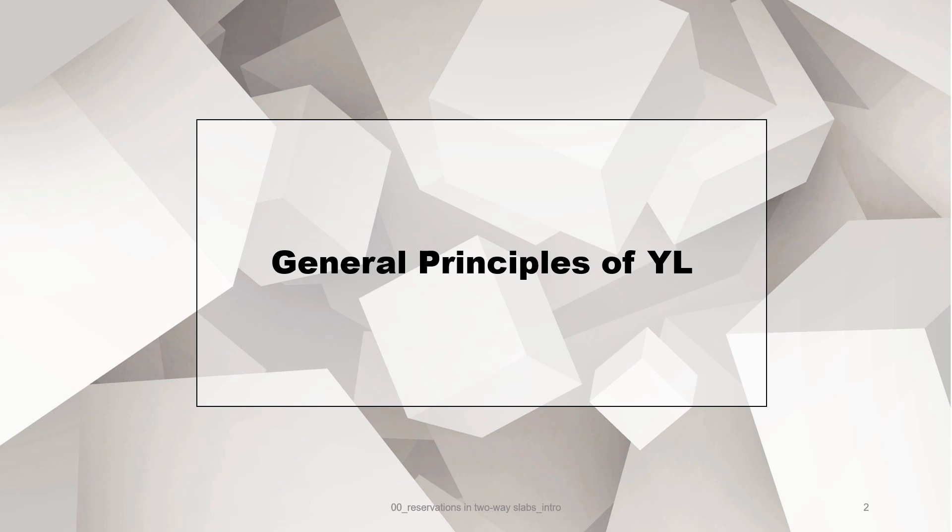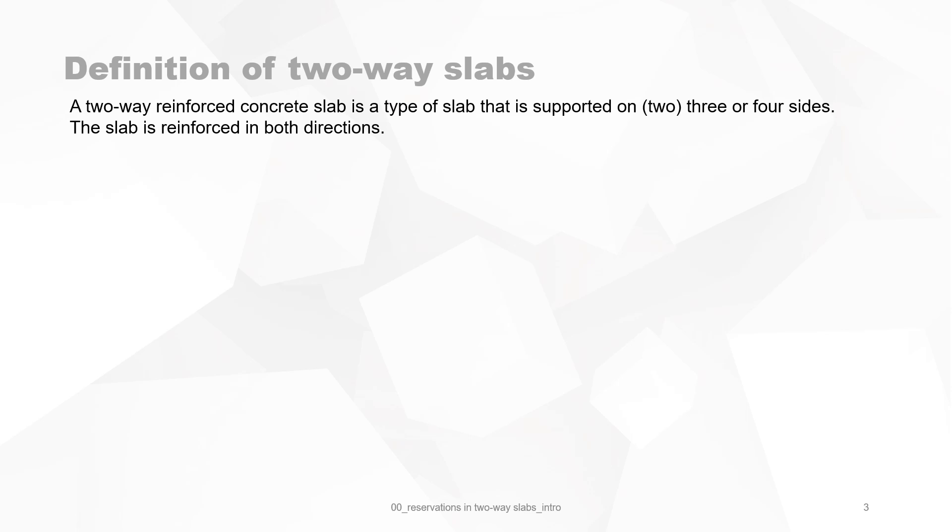This video deals with the general principles of yield lines. First, we start with the definition of two-way slabs. A two-way reinforced concrete slab is a type of slab that is supported on three or four sides, and this slab is reinforced in both directions.